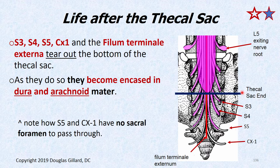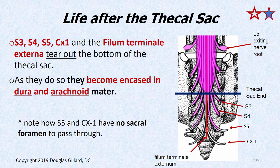The thecal sac ends at the S2 level. A good board question for medical, chiropractic, and physical therapy students: what comes out of the thecal sac — what is life after the thecal sac? The L5, S3, S4, S5 nerve roots all come out as traversing nerve roots and become exiting roots once they pass through. There is no CX2, so that's life after the thecal sac. The filum terminale externa also comes out and attaches to the first or second coccygeal segment.